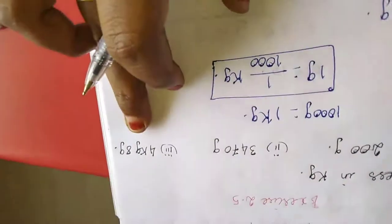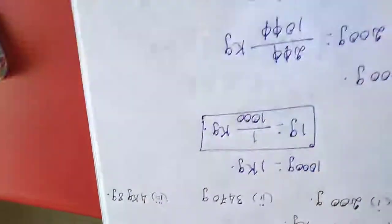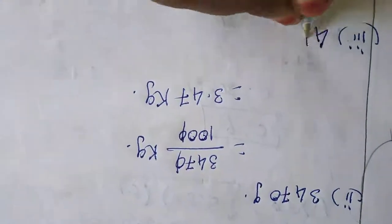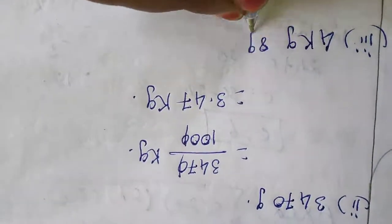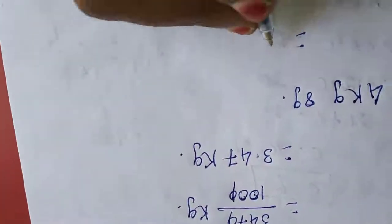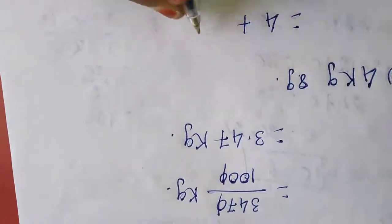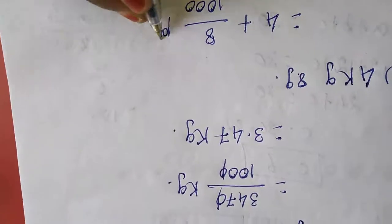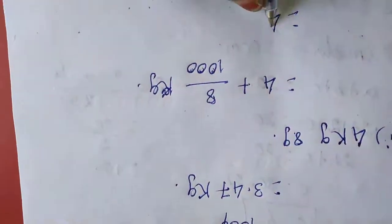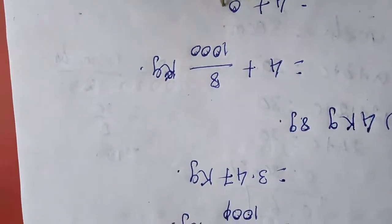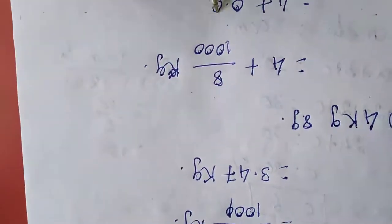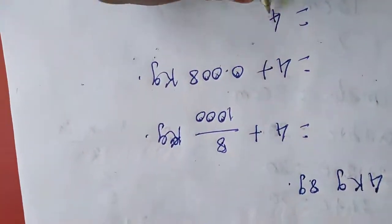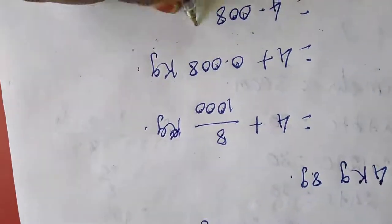Next one is 4 kilogram 8 gram. So for kilogram I am adding: 4 plus this 8 gram — we will write 8 by 1000 kilogram. So 4 plus, 3 digits before that, we have 2 zeros we want to add. If you add this we will get 4.008 kilogram.